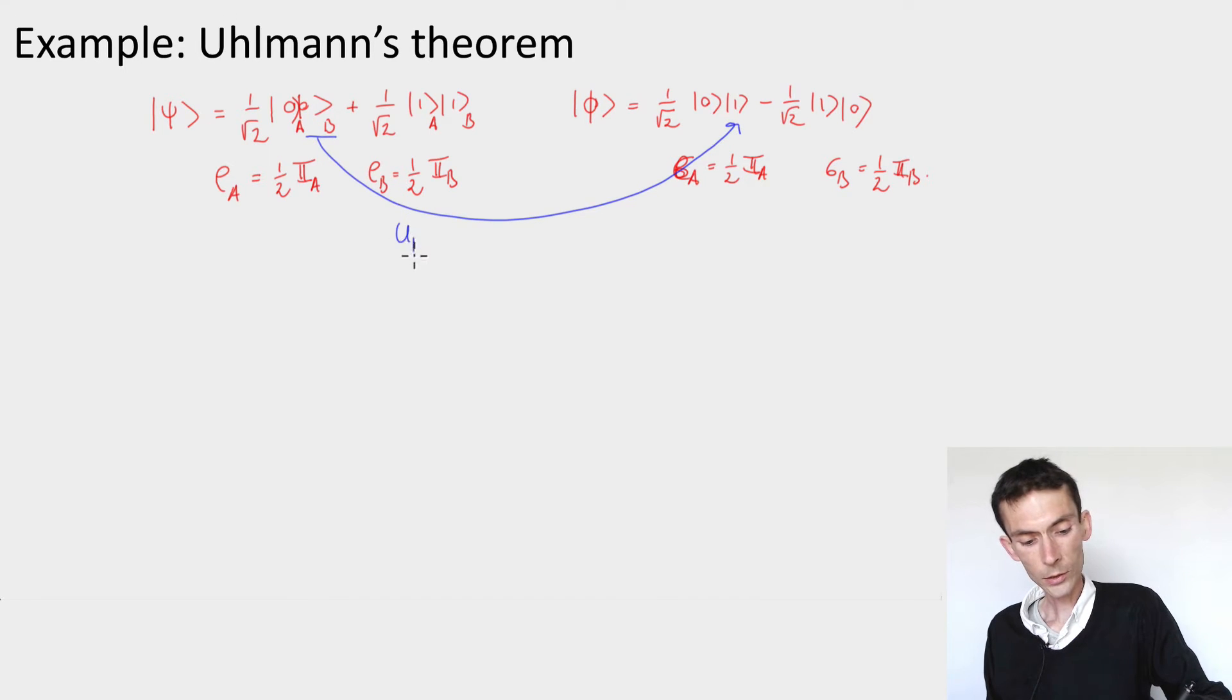This unitary is UB. How do we map psi to phi? We have to send 0 to 1 and 1 to, careful, minus 0. That's a unitary.